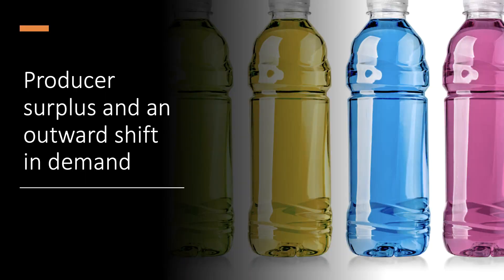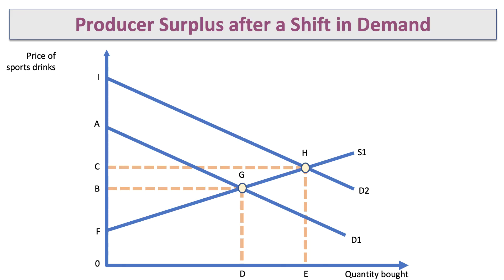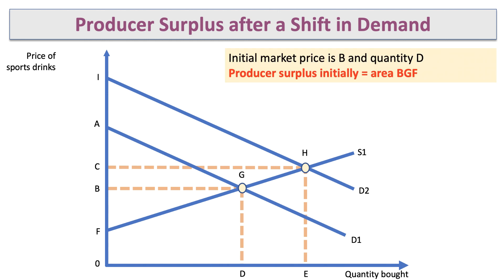What about an outward shift in demand? Let's take the example of a manufacturer of sports drinks. Initially at D1, the price is B and producer surplus is BGF. Then the demand for these drinks goes up — an outward shift of demand from D1 to D2 — that drives the market price up to C, with quantity E at equilibrium H.